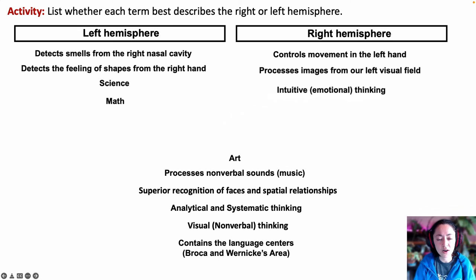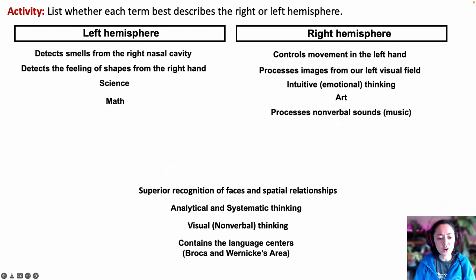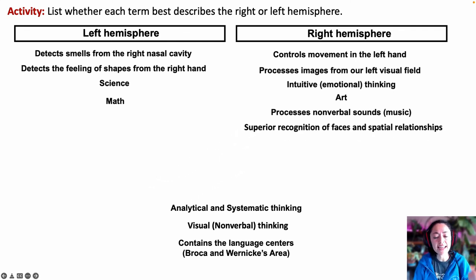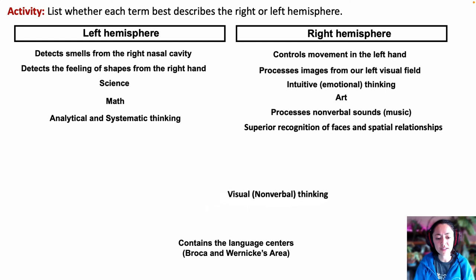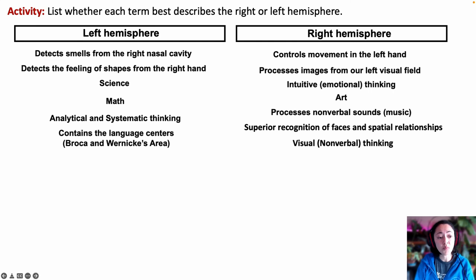How about intuitive or emotional thinking? That would be the right side. Which side is most dominant when performing the arts? The right side. Which side processes nonverbal sounds such as music? The right hemisphere. Which side has superior recognition of faces and spatial relationships? The right hemisphere. Which side is responsible for analytical and systematic thinking? The left hemisphere. What about visual and nonverbal thinking? The right hemisphere. Which half of our brain contains the language centers, such as Broca's area and Wernicke's area? That would be the left hemisphere. Damage in the left hemisphere is therefore more likely to affect language than damage in the right hemisphere.